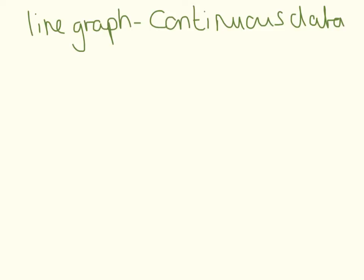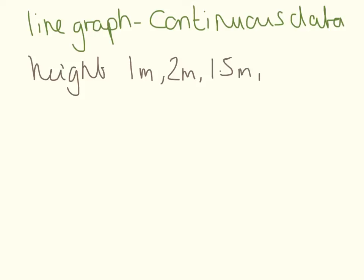Line graphs are the type of graphs you're going to be drawing most at GCSE. These are for continuous data. As you may have guessed from bar graphs, continuous data means we can have halves of values. The point of continuous data is that you can be 0, or 100, or absolutely any number in between — it doesn't matter how small that division is.